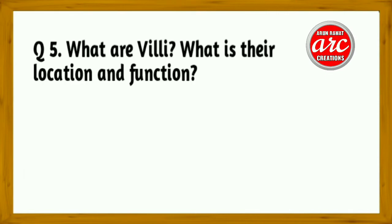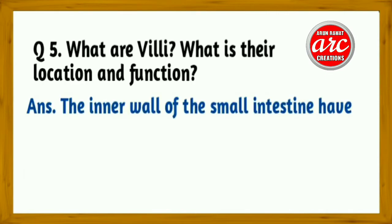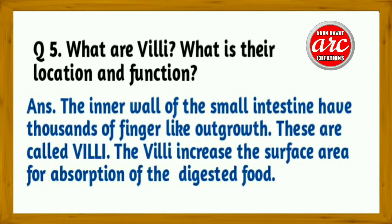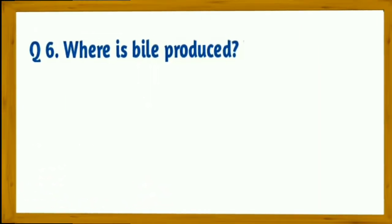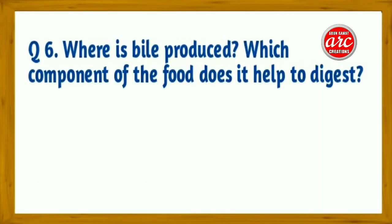Question 5: What are villi? What is their location and function? Answer: The inner wall of the small intestine has thousands of finger-like outgrowths called villi. They increase the surface area for absorption of digested food.